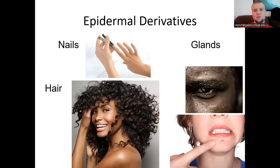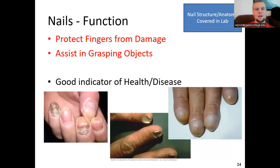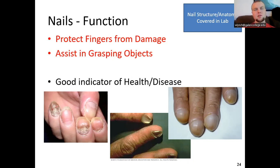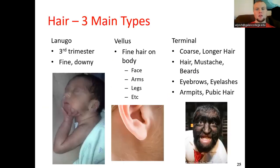Epidermal derivatives include the hair, nails, and glands. Nails are found on the ends of fingers and toes, mainly for protection of fingertips from damage and to a lesser degree assisting in grasping objects. They can also serve as a health indicator — good color and consistent perfusion in the nails generally indicates okay health.